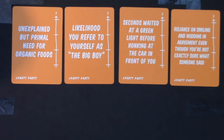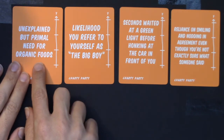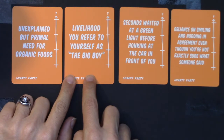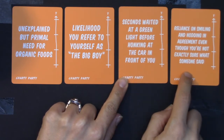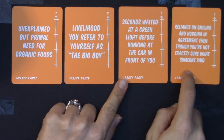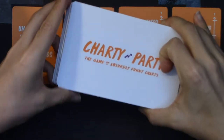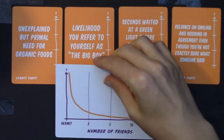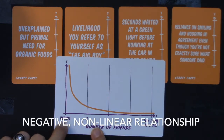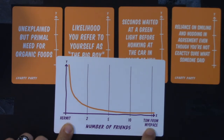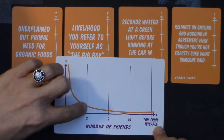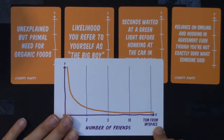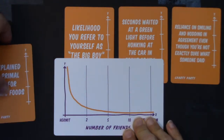Hey Math 43, we're back. We've got four new potential y-axes: unexplained but primal need for organic foods, likelihood to refer to yourself as 'the big boy,' seconds waited at a green light before honking at the car in front of you, and reliance on smiling and nodding in agreement even though you're not exactly sure what someone said. For the chart card I pulled: number of friends, going from a hermit to two friends, five friends, ten friends, and Tom from Myspace. It decreases — hermits have something really high, and as soon as you have two friends it's pretty low and gets lower. This is actually exponential decay because of the curve.